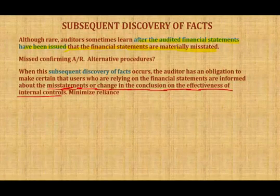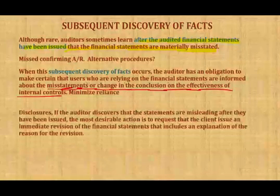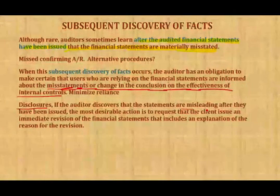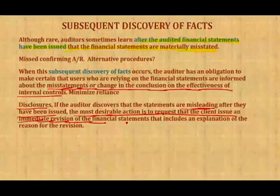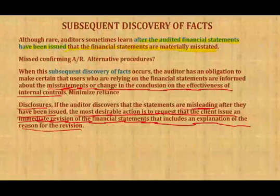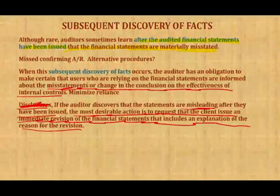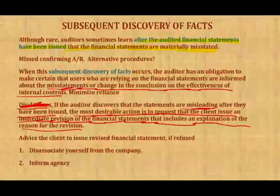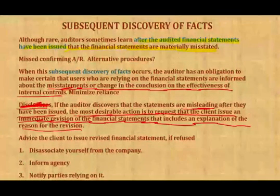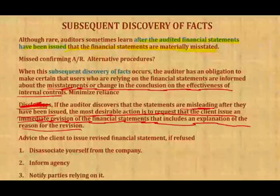If the auditor discovers that the statements are misleading after they have been issued, the most desirable action is to request that the client issue an immediate revision of the financial statements including an explanation of the reason for the revision. If the client refuses, you disassociate yourself from the company, inform any relevant agency, and notify parties relying on the financial statements that they should not rely on them because the financial statements no longer fairly represent the conditions of the company.